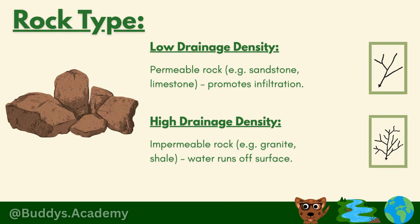Now let's look at rock type. For low drainage density you need permeable rock — rock that allows water to pass through it. Examples are sandstone and limestone, which promote infiltration. For high drainage density you need impermeable rock — rock that does not allow water to pass through. Examples include granite or shale, and since water cannot pass through it, it flows over the surface and leads to more runoff.